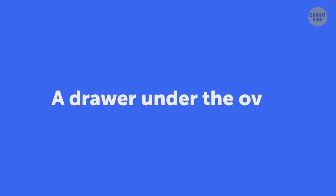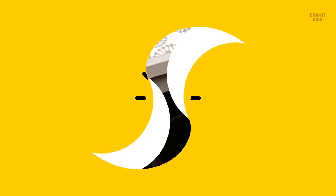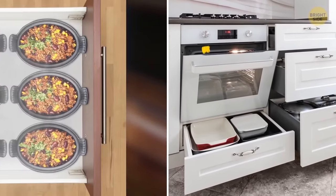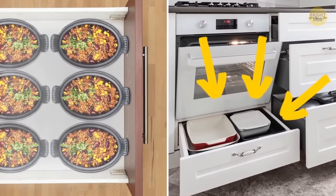A drawer under the oven. It's simple. You needed to store all those pots and pans. Maybe, but it wasn't this drawer's original purpose. You can use this place to keep your food warm while something else is being prepared in the oven.